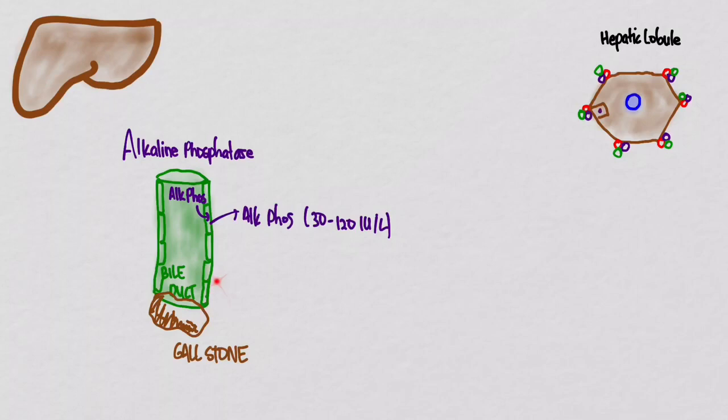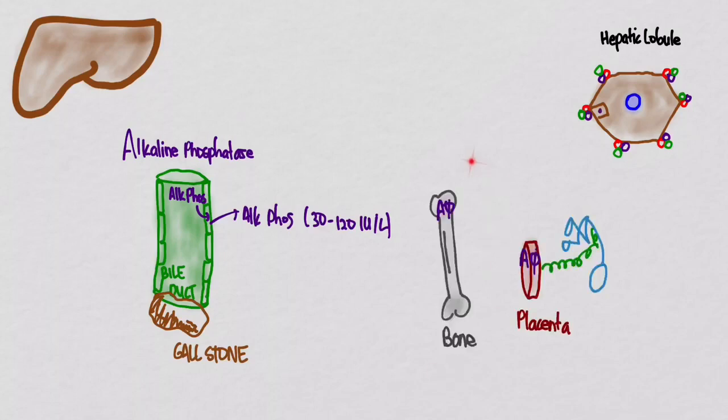Now, just like with the AST that was found in other places, so was ALK-FOS. It's found in bone as well as the placenta and other organs. So things that are affecting the bone and the placenta, such as pregnancy or bone diseases, can also cause a rise in the alkaline phosphatase. But remember, for our case, we're looking at it as an expression of damage to biliary ducts.